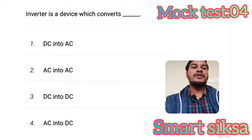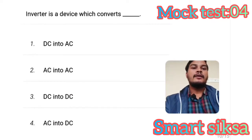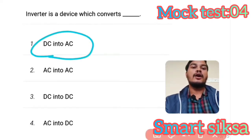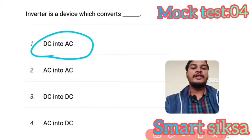Next question: Inverter is a device which converts? Answer is DC to AC, option number A. An inverter converts direct current into alternating current.